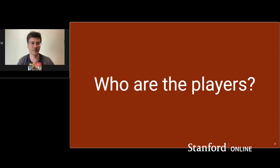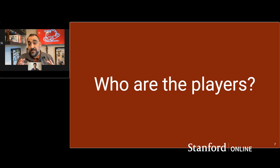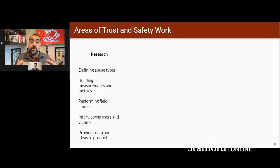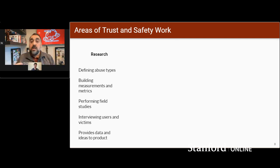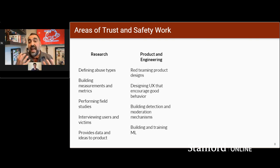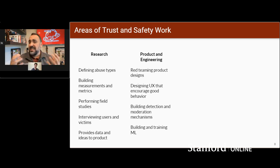That's a great question. One of the great things about trust and safety is it attracts people from a variety of different disciplines. You have research teams — people from social science, sociology, social work, or data science backgrounds — whose job it is to think about what are the abuse types and how do we measure them. They do field studies, interview users and victims, and come up with ideas on how to protect them. Then you have product and engineering teams who design good user experiences, build detection mechanisms, build features to keep people safe, and build machine learning systems and content moderation pipelines.